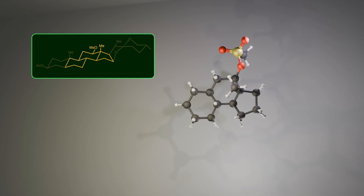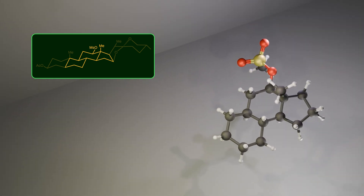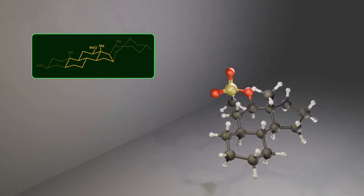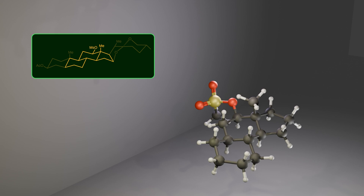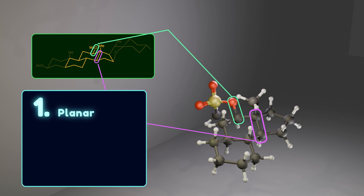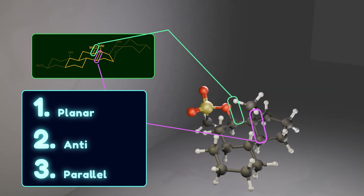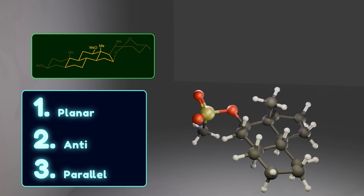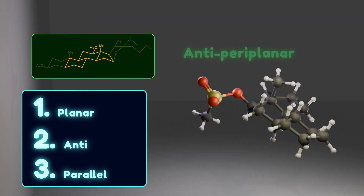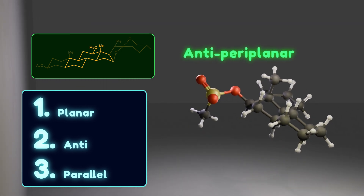Now let's go into 3D space to see what's actually happening. Look at this carbon-carbon bond and the carbon-oxygen bond. There is a very specific geometric arrangement here. First, these two bonds are planar, meaning they lie in the same plane. Second, they are anti to each other. And third, they are parallel to each other. If two bonds meet these three criteria, we say that they are anti-periplanar.